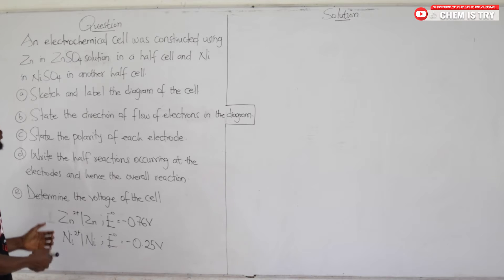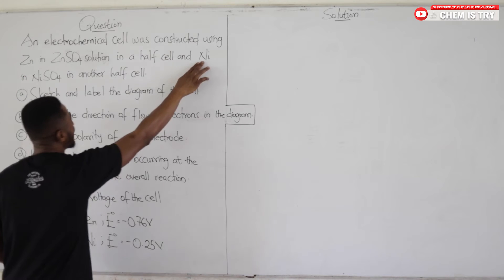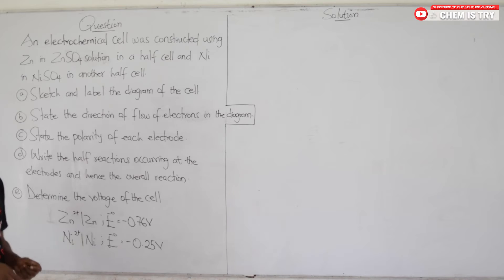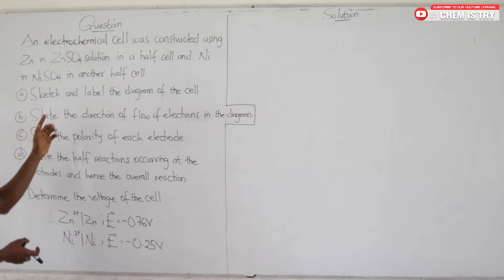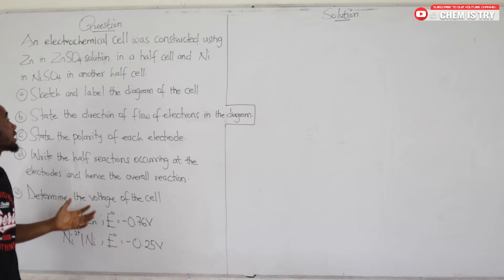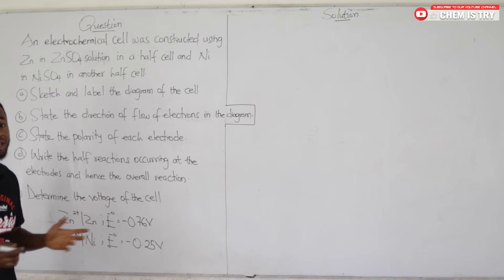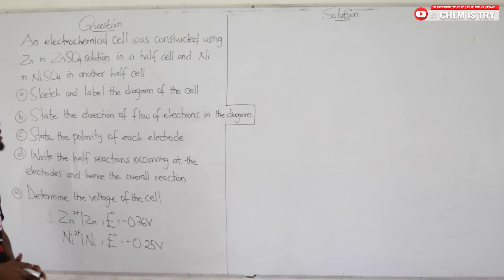When given such a question, we first have to identify what we have. We have a zinc electrode in zinc sulfate solution, and nickel in nickel sulfate solution — the zinc couple and the nickel couple. But if nickel and zinc meet, which one is going to lose electrons, which one is going to gain electrons? Which one serves as the anode and which one serves as the cathode? We have two ways to identify that.